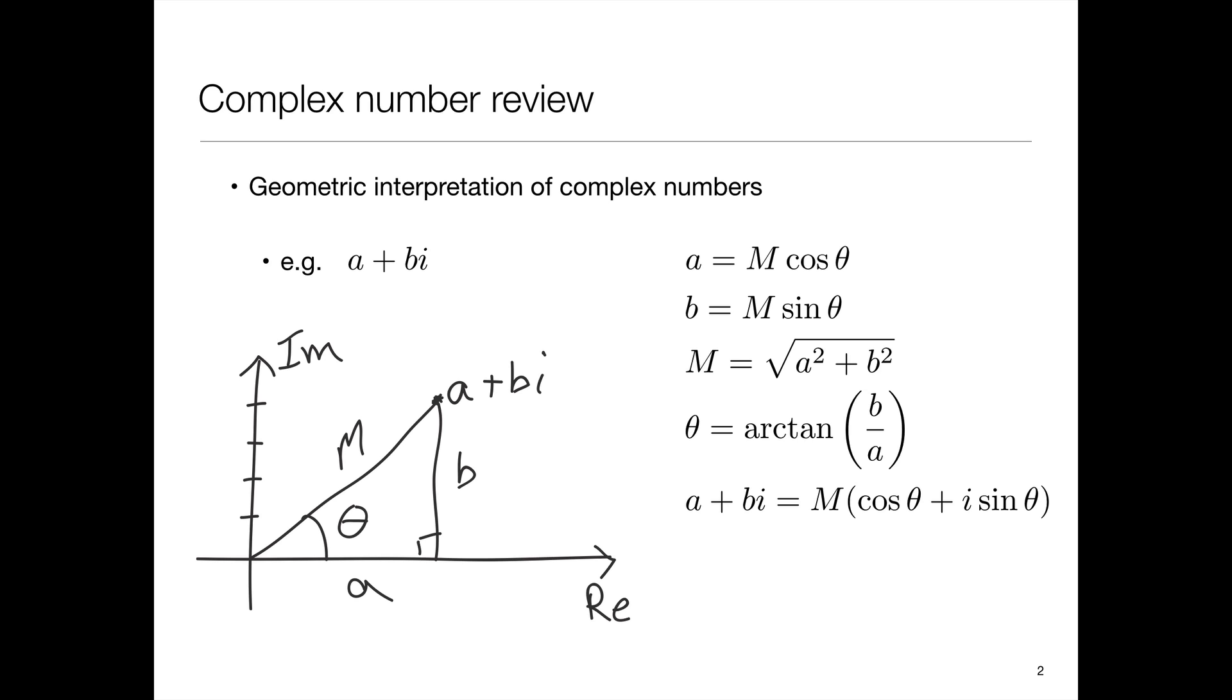So rewriting a plus bi using this notation here, we can see that a plus bi is going to be m factored out multiplied by cosine theta plus i sine theta. So m is called the magnitude of the complex number and theta is sometimes called the argument or phase of that complex number.